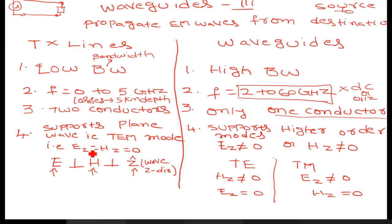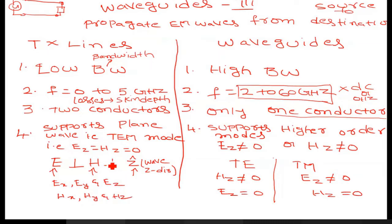That is why it is called the transverse electromagnetic mode. Assuming the wave is propagating in the Z direction, the electric field will have components EX, EY, and EZ, and the magnetic field will have HX, HY, and HZ. In TEM mode, EZ and HZ are equal to zero — meaning in the direction of wave propagation, the electric and magnetic field values are absent.